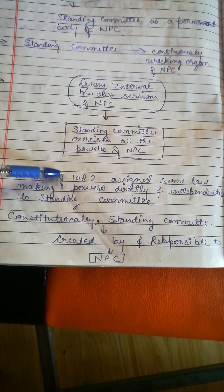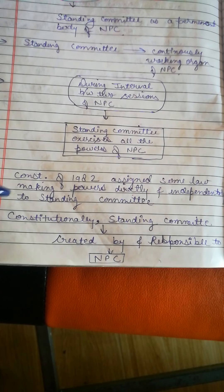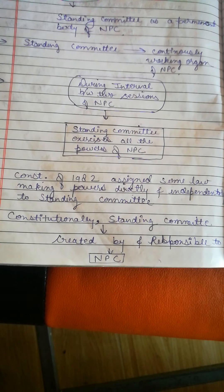The Constitution of 1982 assigned some law-making powers directly and independently to the Standing Committee. So the Chinese Constitution of 1982 gave the Standing Committee direct and independent power to make certain laws.